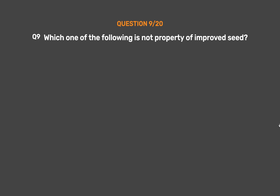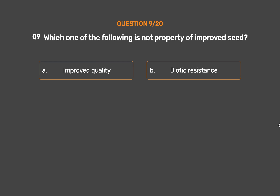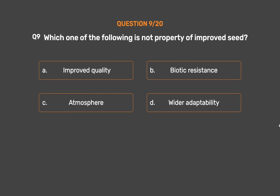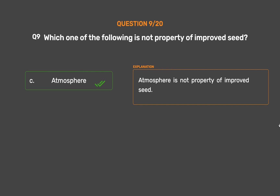Question No. 9. Which one of the following is not a property of improved seed? Option A: Improved quality. Option B: Biotic resistance. Option C: Atmosphere. Option D: Wider adaptability. The correct answer is Option C: Atmosphere. Atmosphere is not a property of improved seed.